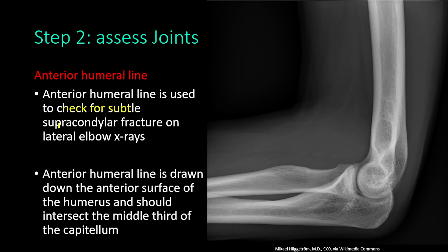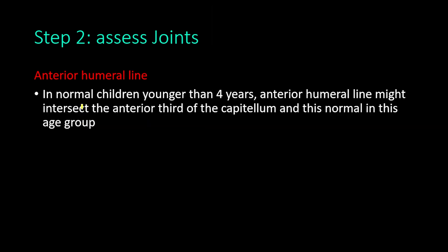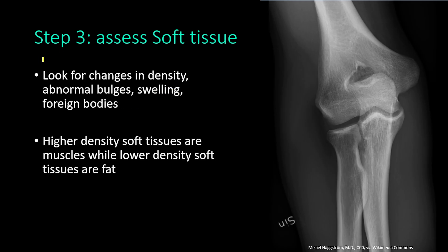The anterior humeral line is used to check for subtle supracondylar fractures on the lateral elbow x-ray. It is drawn down the anterior surface of the humerus and should intersect the middle third of the capitellum. This line is drawn only on the lateral view. In normal children younger than four years, it may intersect the anterior third of the capitellum, which is normal for that age group.